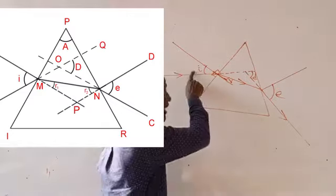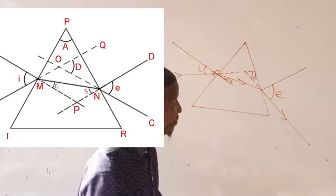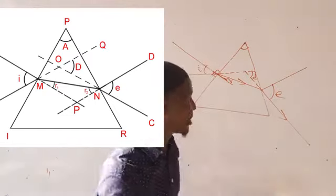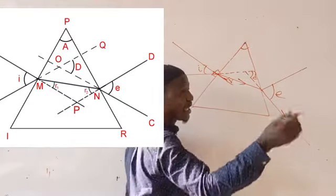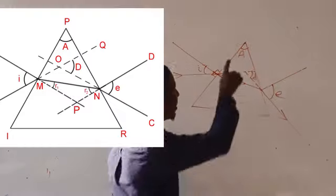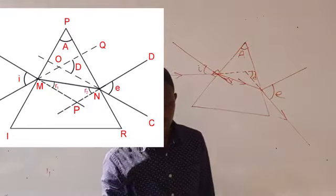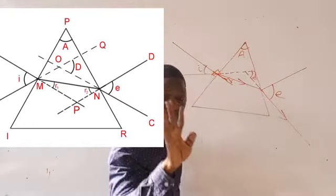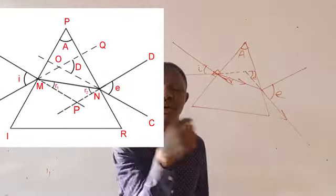This angle of deviation depends on three major things. The first is the angle of incidence. Then it depends on the refracting angle of the prism — for example, whether you are using an equilateral triangular prism where each angle is 60 degrees, or an isosceles triangular prism. The deviation also depends on the refractive index of the material of the prism.